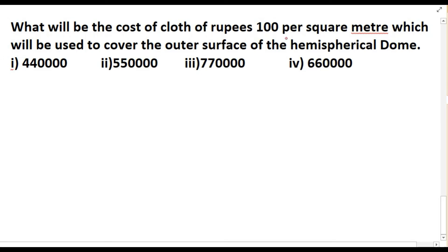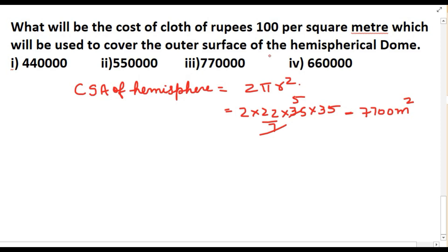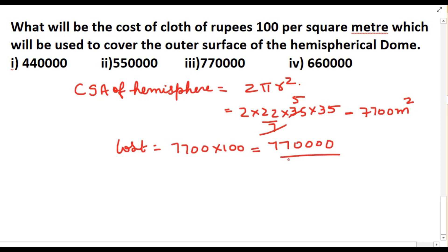What will be the cost of cloth at ₹100 per square meter used to cover the outer surface of the hemispherical dome? First, we find the curved surface area of the hemispherical dome: CSA = 2πr² = 2 × (22/7) × 35 × 35 = 7,700 m². The cost = 7,700 × 100 = ₹7,70,000. So this will be the total cost.